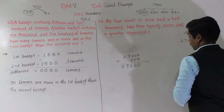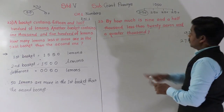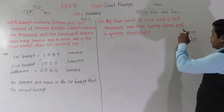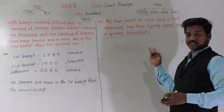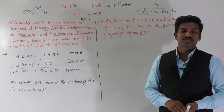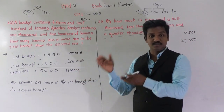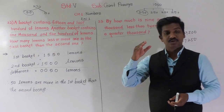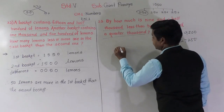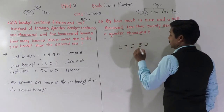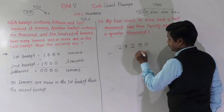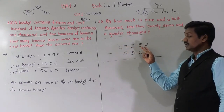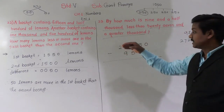Now we have to find by how much 9500 is less than 27250. Whenever we compare two numbers to find by how much one is less than the other, we do subtraction — from the bigger number we subtract the smaller number. The bigger number here is 27250, and from this we will subtract 9500.